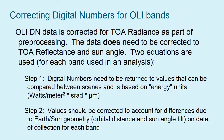For the OLI data, the USGS is already making the correction to top-of-atmosphere radiance as part of their pre-processing, so when you get the image it has already been corrected for that. However, the data is not corrected for top-of-atmosphere reflectance and sun angle, so you need to make those corrections for the OLI data. It is a two-step process: step one converts the digital numbers to energy units, and step two corrects for the sun geometry.